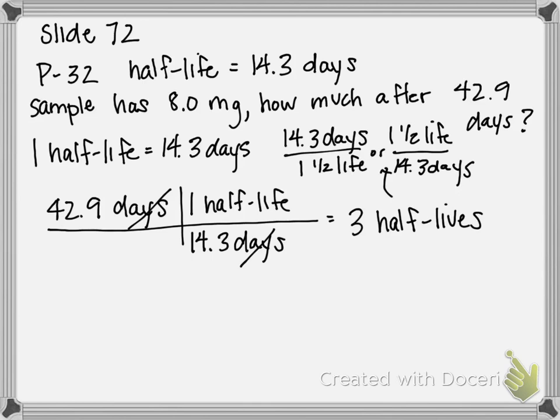So after one half-life, I'm writing half twice. Let's see. One half-life, we go from eight milligrams to four milligrams, because we're getting rid of half. So basically, we just divided eight by two.